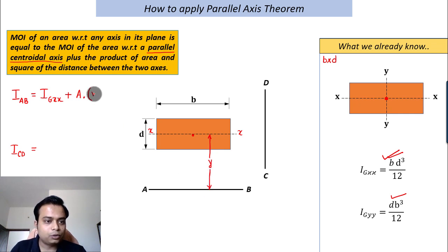In the same manner, if I were to calculate the moment of inertia with respect to CD, you need to draw a line parallel to CD passing from the centroid, something like this, and let's call this yy. It's going to be equal to Igyy plus the area bd multiplied by the distance between these two parallel lines, that is essentially x squared.